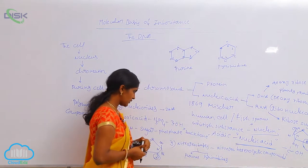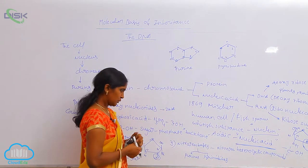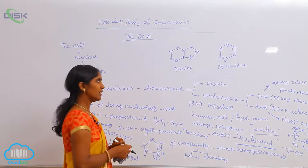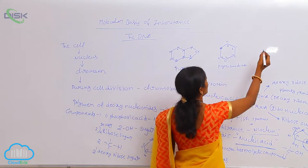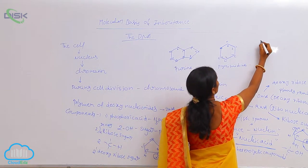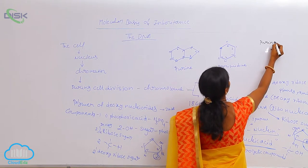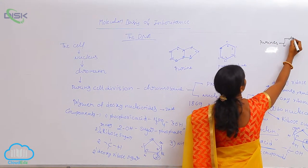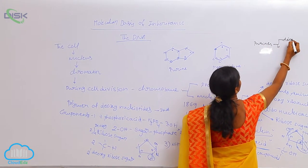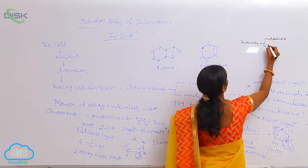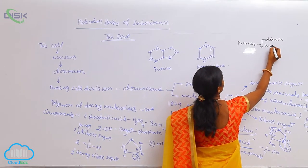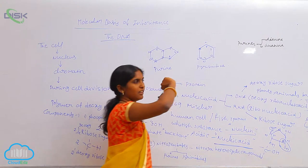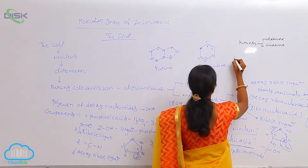So, what are the two different types of the nitrogen bases included in the DNA? Purines belong to two types: adenine and guanine. Both are present in DNA as well as RNA.